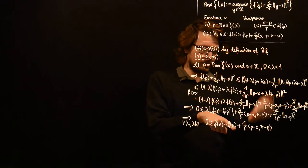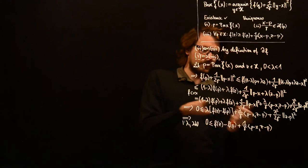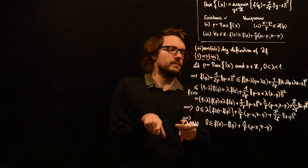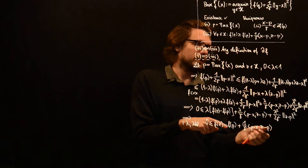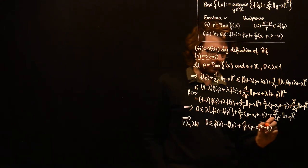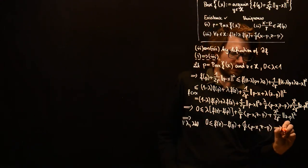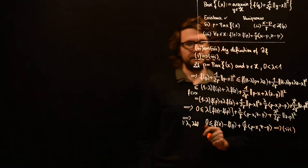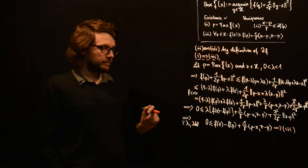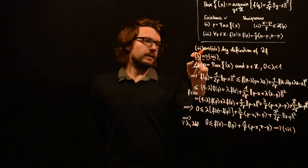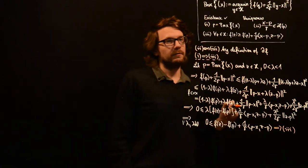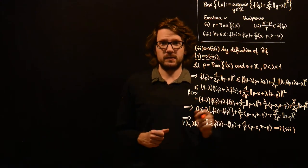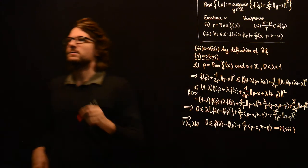Now we switch the order, since we are putting this to the left hand side, so we get x minus p times z minus p, which gives us property 3. So we have now shown that 1 implies 3, and 2 and 3 are equivalent. What remains is to show that 3 implies 1.